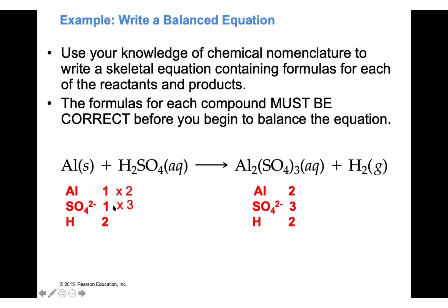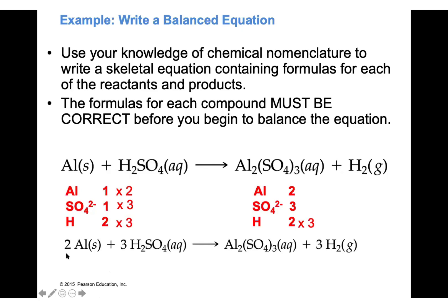Sulfate on the right is 3 but on the left is 1, so I multiply the left compound by 3. That coefficient of 3 also multiplies the 2 hydrogens in that compound, giving 6 hydrogens on the left. So I put 6 in front of H₂ on the right. Final balanced equation: 2 Al + 3 H₂SO₄ → Al₂(SO₄)₃ + 6 H₂ — verified with 2 Al, 3 sulfate, and 6 hydrogen on each side.